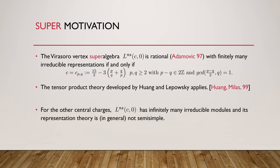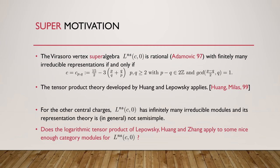We would like to know if we can still say that there is a tensor product structure in a nice enough category of modules for the super N equals 1 Virasoro vertex algebra for all central charges, including those central charges in which we'll have non-semisimple representation theory. In particular, does the logarithmic tensor product theory developed by Lepowsky, Huang, and Zhang apply to some nice enough category with some super modifications, since we're in the super setting?